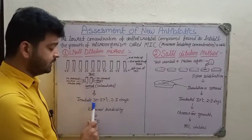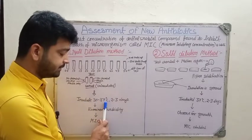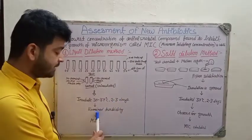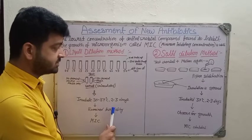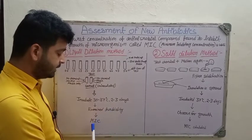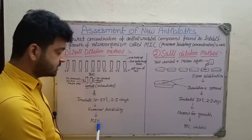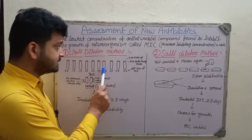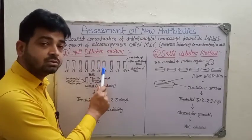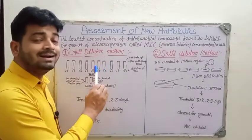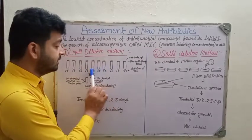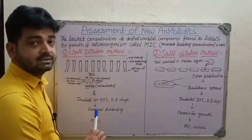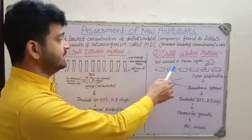After this setup, the tubes are incubated at 30 to 37 degrees Celsius for two to three days. After incubation, turbidity is examined to determine in which concentration the maximum inhibition of growth occurred. The tube that is least turbid is considered the MIC.